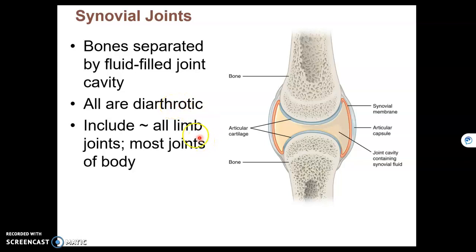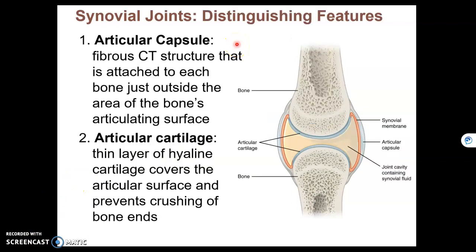Synovial joints make up most of the joints in your body besides those covered previously. These are the distinguishing features present in all synovial joints. They all have an articular capsule to isolate the inside of the joint from the outside. There is articular cartilage, which is hyaline cartilage — we know hyaline cartilage exists at the end of long bones, and we call that articular cartilage.